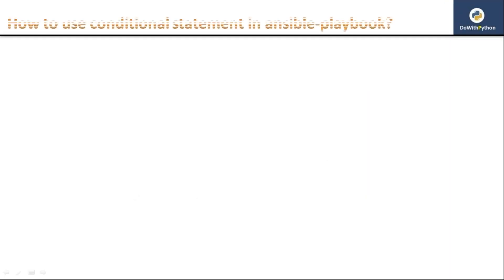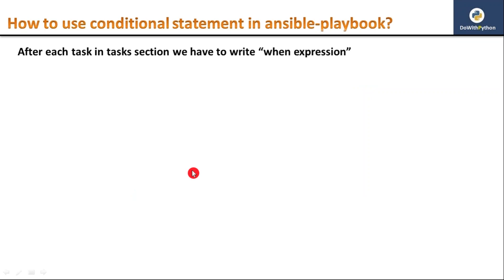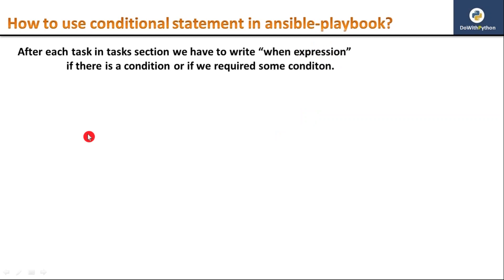Let me explain how to use a conditional statement in an Ansible playbook or YAML scripting. After each task in the tasks section, we have to write a 'when' expression or 'when' section if you want to check the condition. The expression is something like whether the server is running or not, or whether a file is existing or not. That expression result must be either true or false.